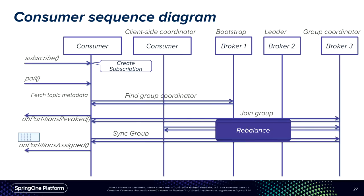The consumer we're looking at is the new consumer added in Kafka 0.9. In older versions there was a simple consumer and a high-level consumer with offsets stored in Zookeeper. The actual assignment of partitions is done by the client-side coordinator. One advantage of client-side assignment is that clients can define their own assignment strategies without changing the broker.